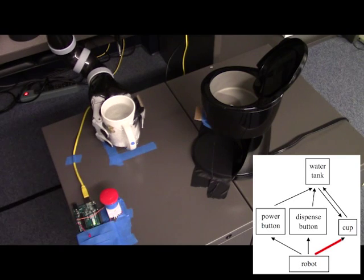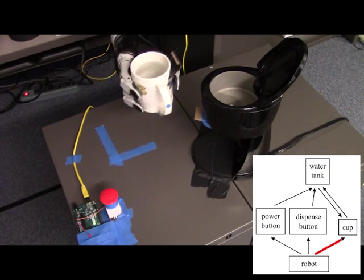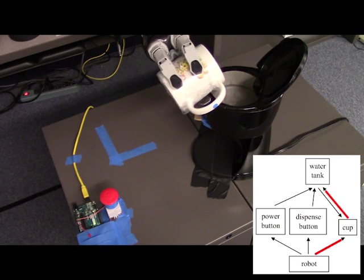Specifically, it first interacts with the cup by pouring the water into the water tank, thereby activating the interaction between the cup and the water tank. Second, it presses the power button, which causes the water in the tank to heat.